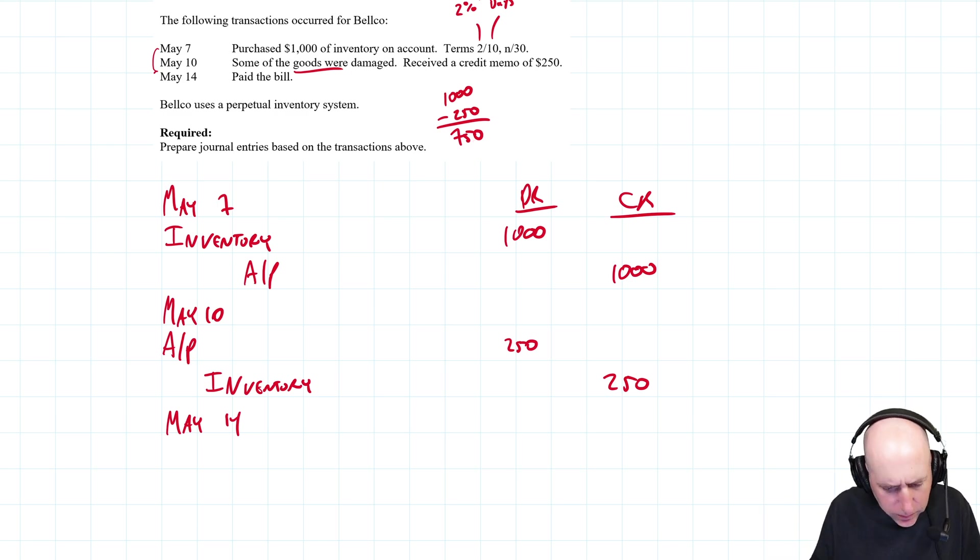We don't get to take a 2% discount on the whole $1,000 because we basically returned a bunch of the goods. So what's a 2% discount on $750? It's $15, that's the size of the discount. So how much are we actually going to pay here? Well, $750 minus a $15 discount, we're going to pay $735.